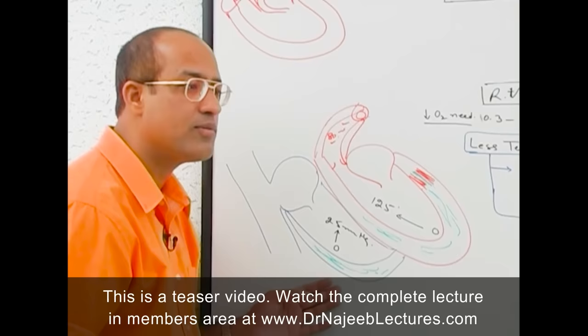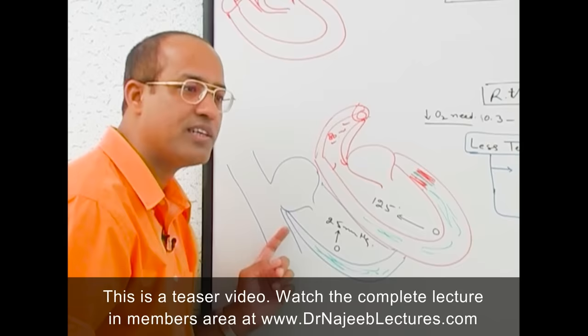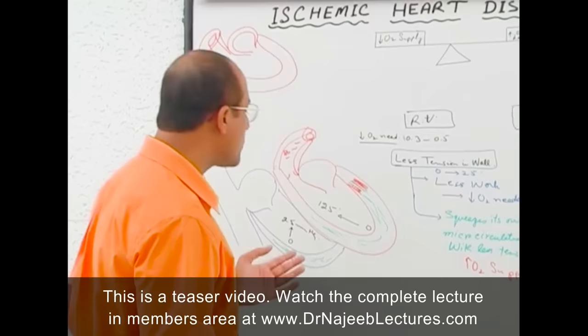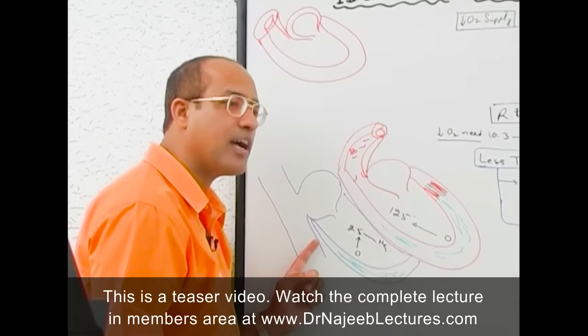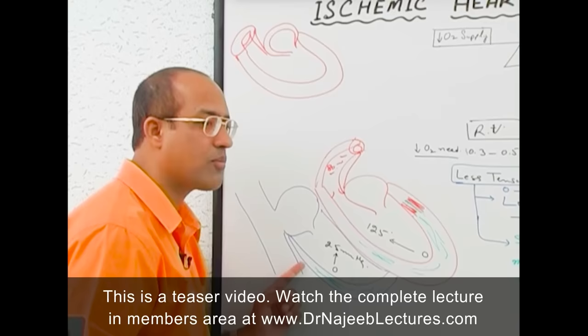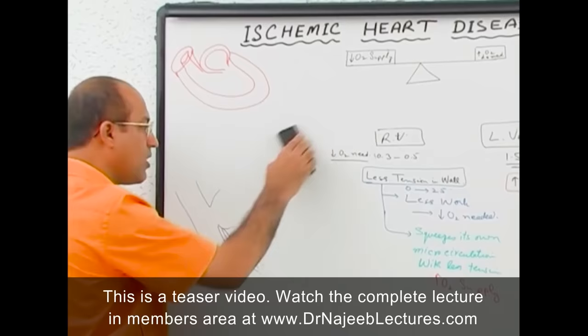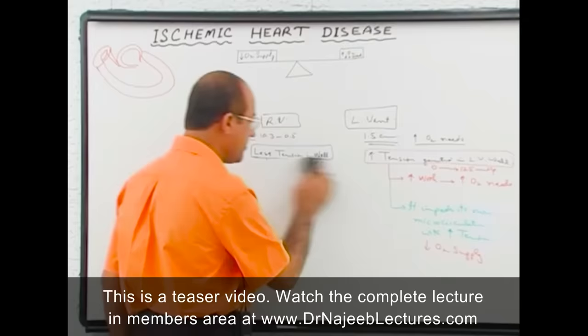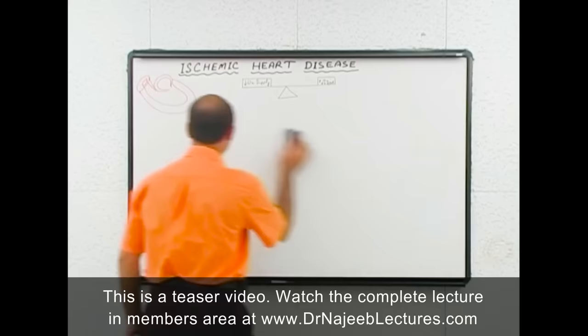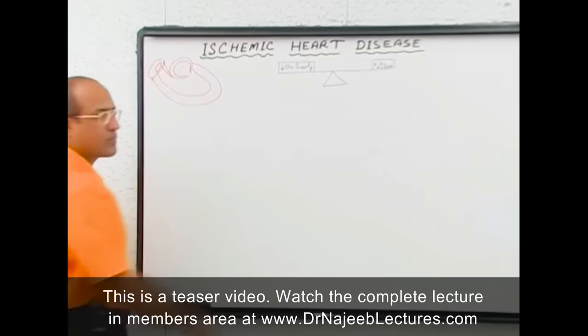Right ventricular ischemia usually occurs when right ventricle is hypertrophied and blood flow through the right coronary artery is reduced. Now let us discuss what conditions can lead to reduced blood flow to the ventricle. Here is the coronary artery ostium and the coronary artery supplying the ventricular tissue — we will see how blood flow through this can be reduced.